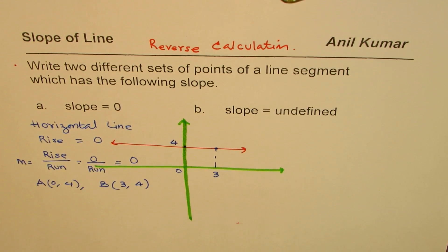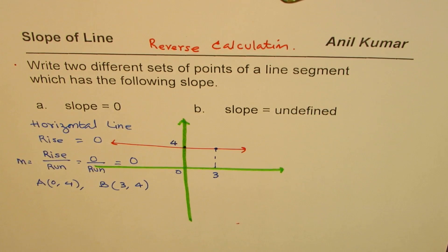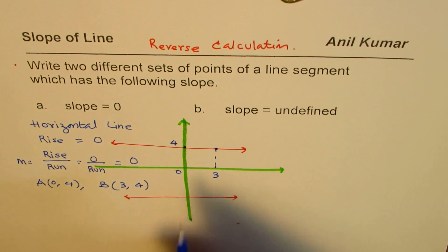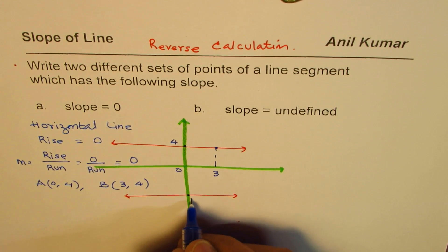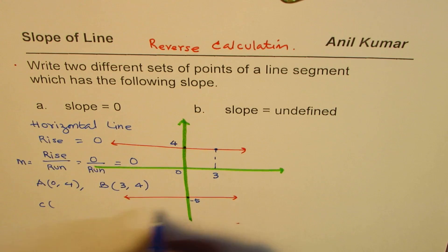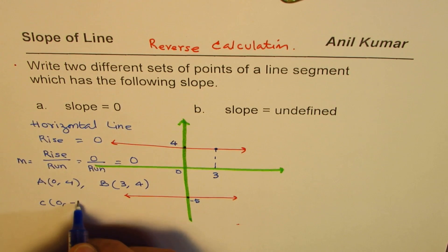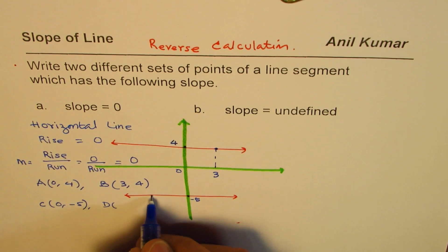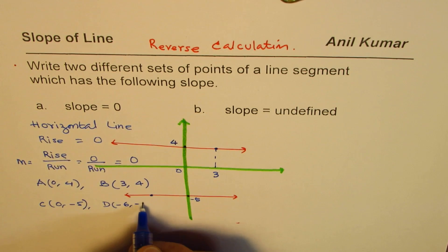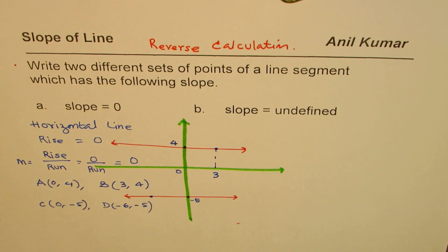You could consider a line like this one here also. In this case, if my y-intercept is, let's say, minus five, then the points C and D could be: x value of zero, y value of minus five, and D any other point—it could be negative, whatever, let's say negative six—but y value remains same. The important thing here is that x can change but y remains same.